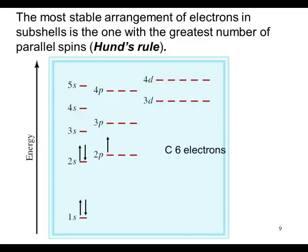So for carbon, this is the correct electron configuration. We write it as 1s2, 2s2, 2p2.